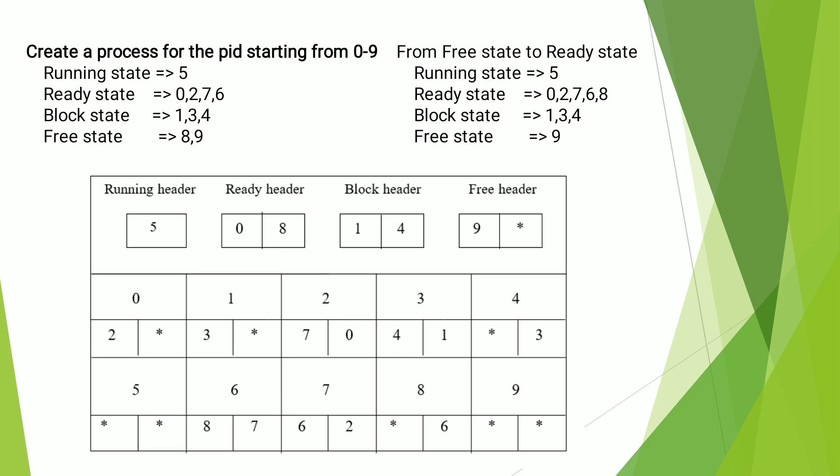First, Create a Process. To create a process, consider the running state is process five, and here we have nine processes total — each process has a unique Process ID from zero to nine. The processes which are in the free state can be moved to the ready state.